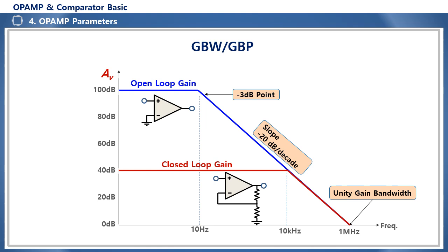The amplifier circuit that uses the op-amp is not used in the open loop state, but is used by applying negative feedback between the output stage and the minus input. The gain in this state where feedback is applied is called the closed loop gain. For example, if the gain of the negative feedback op-amp circuit is 40 dB, i.e. 100 times, the coverage band is reduced to a frequency band of around 10 kHz.